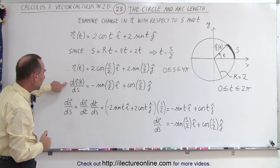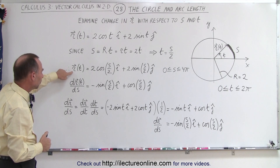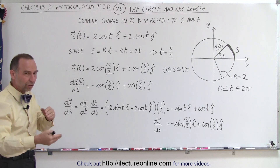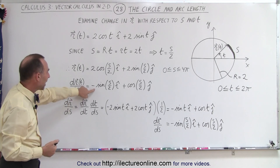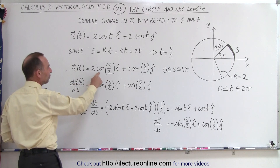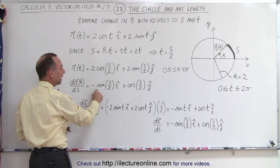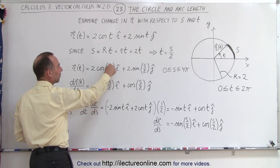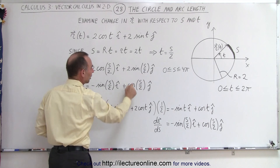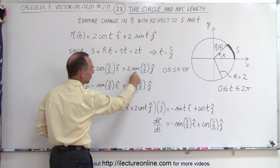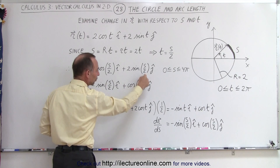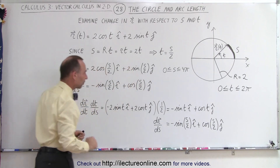If we take the derivative of the position vector with respect to s — with respect to the arc length — we get minus the sine of s over 2. The derivative of cosine gives minus sine, and the derivative of the angle s over 2 gives 1/2, which cancels with the 2. Similarly, the derivative of sine gives cosine, and the derivative of s over 2 gives 1/2, canceling the 2.